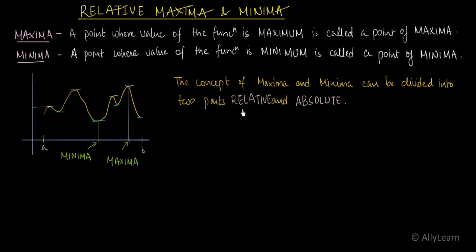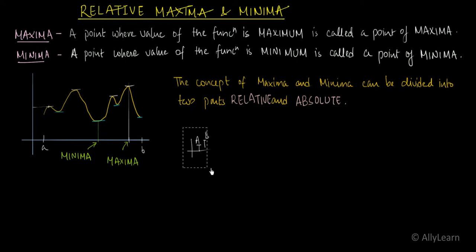Now I need to explain 'relative'. Relative means to relate or compare something with its surroundings — yaani ki compare karna, uske aaju-baaju mein jaake pata karna. For example, if we have two things and we compare them, we can say point A is smaller than point B and point B is greater than point A. So A is relatively smaller than B and B is relatively greater than A. That is what relative means for us — looking at the nearby points. So if I ask you to find the relative maximum, what do you have to do?